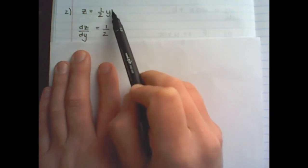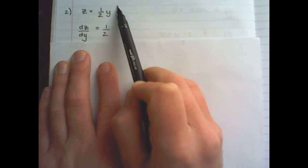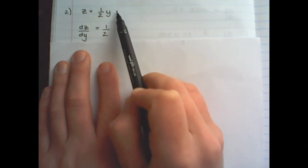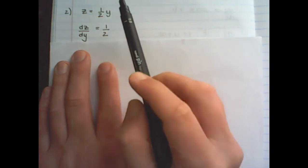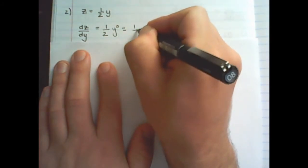So it's a half times y, and I multiply a half of the exponent of 1, and I subtract 1 from the exponent. So it's 1 minus 1, which is y to the power of 0, which will become a half.